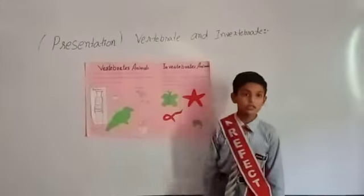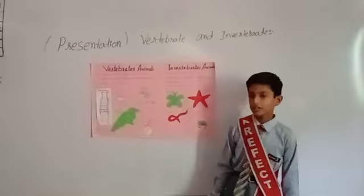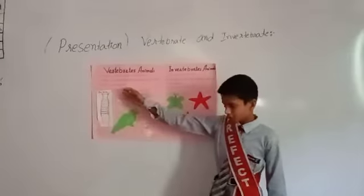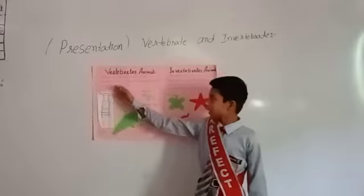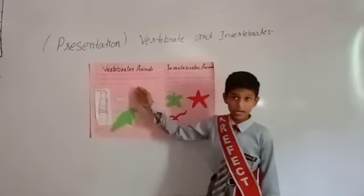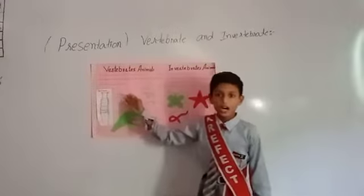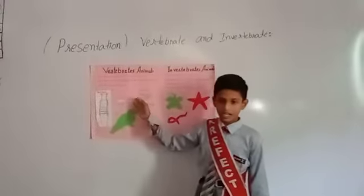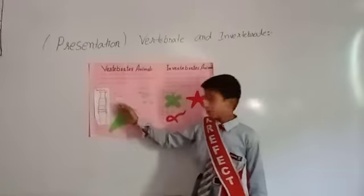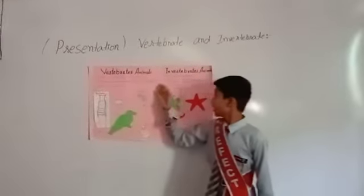Vertebrates are those which have a backbone. For example, fish, amphibian, reptiles, bird, and mammals are all examples of vertebrates. Vertebrates are called bilated animals.